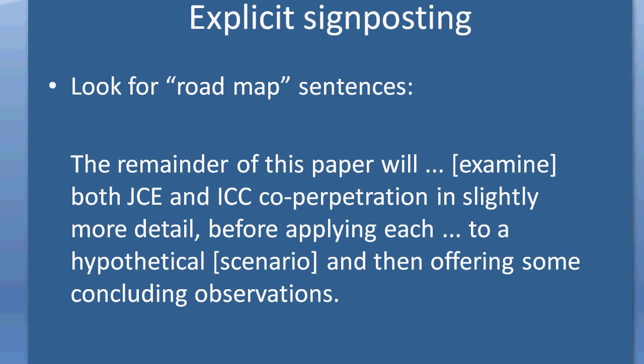On the way through a document, any piece of legal writing, look for explicit signposting — look for what I call roadmap sentences. Sentences that tell you expressly where the paper is going and how it's going to get there. And some of them might be very crude and obvious, like this one of mine: 'The remainder of this paper will examine both joint criminal enterprise and international criminal court co-perpetration in slightly more detail before applying each to a hypothetical scenario and then offering some concluding observations.' I am signposting the next three or four steps in the paper: I'm going to discuss theory A, theory B, apply both to a scenario, and then conclude — a very crude, obvious roadmap sentence.